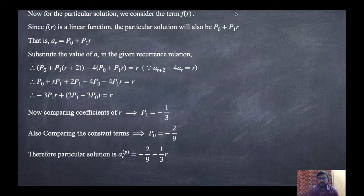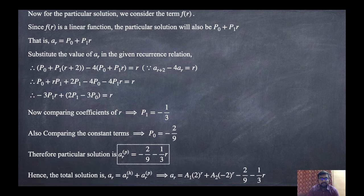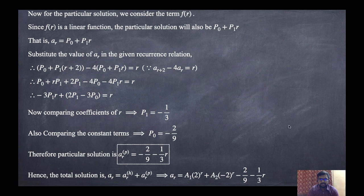The total solution is AR equals A1·2^R plus A2·(-2)^R minus 2/9 minus (1/3)·R. This is the final solution.